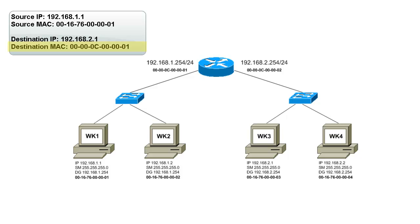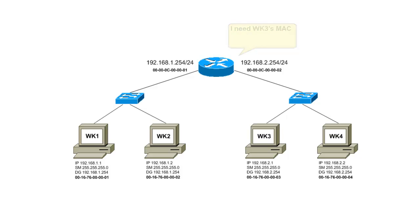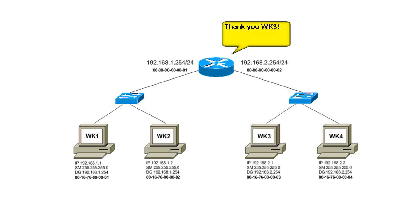Even though the packet has a target IP that doesn't belong to the router, the target MAC address does belong to the router. Therefore, the router will bring the packet into its IOS. Once the router receives the packet, it looks at the destination IP address and performs the same subnet determination process. To deliver the packet, the router must know Workstation 3's MAC address, so it will send out an ARP request if it doesn't have the MAC address in its ARP table. Workstation 3 will receive this ARP request and respond back to the router. Now that the router has Workstation 3's MAC address, it updates the packet information and sends the packet on its way.